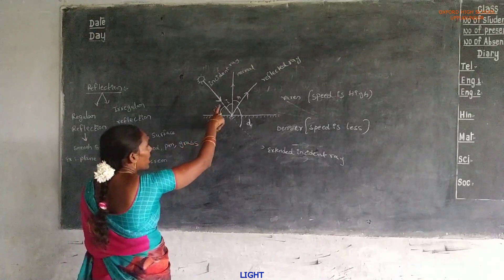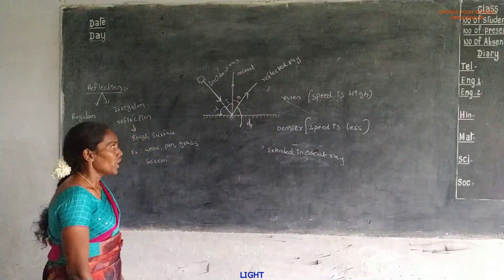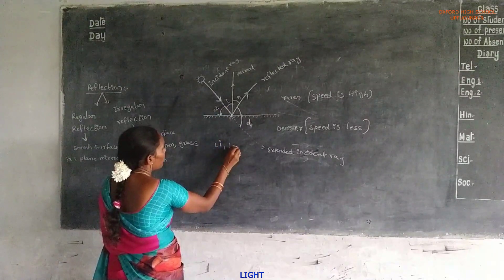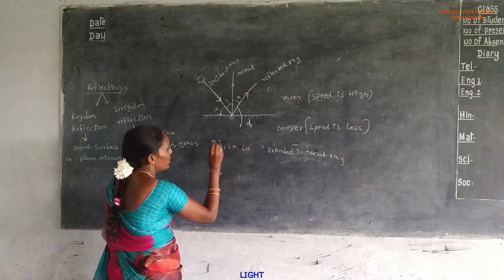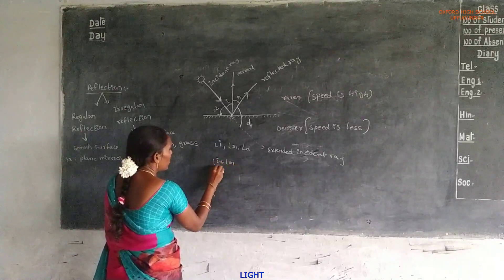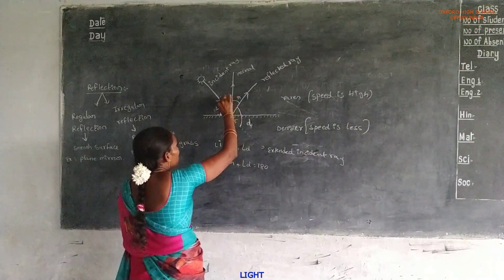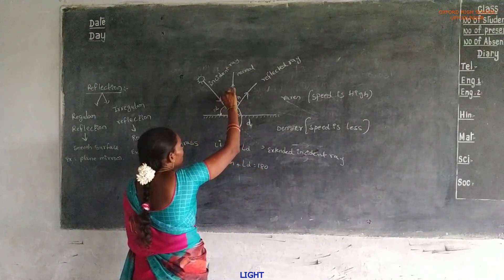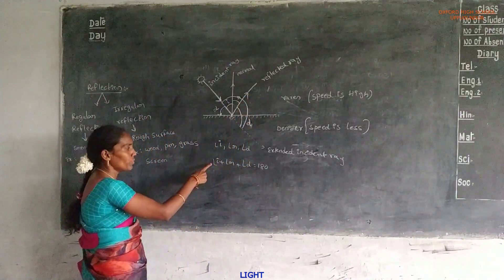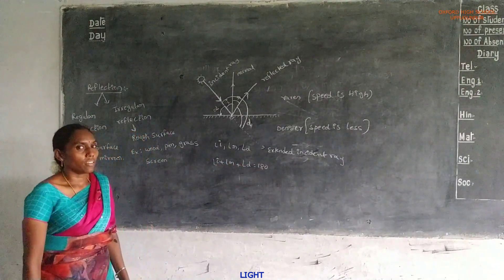Glancing angle, angle of incidence, angle of reflection, and angle of deviation. The relation between angle of incidence, angle of reflection, and angle of deviation is: angle i plus angle r plus angle d is equal to 180 degrees.